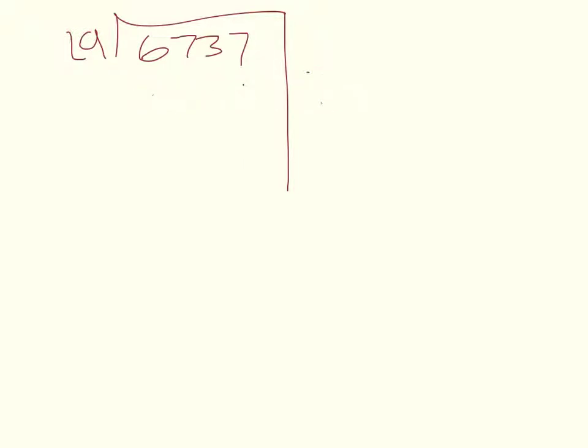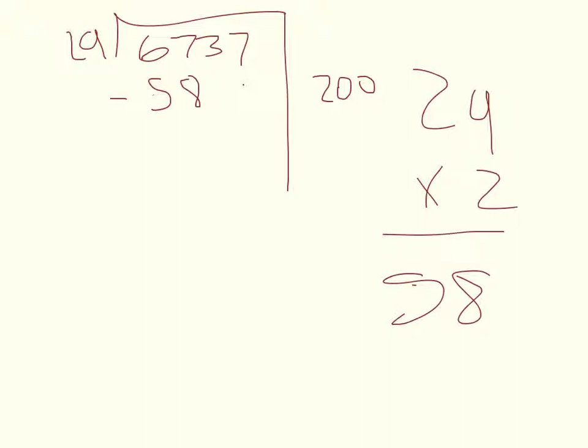Now let's get to the problem. 29 times 2 is 58, so that will help us. 29 times 200 would be 5,800. We have to write 200 here and subtract 5,800, and we would get 937.